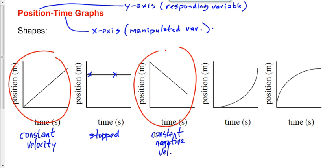Fourth graph — it's a tougher one, but reason through it. For graph one, the position was increasing at a constant rate. Here the position is increasing as well, but not at a constant rate. The position is increasing quicker and quicker as time goes by — it's speeding up. What's another word for speeding up? Acceleration. I'll call this a positive acceleration. We haven't formally defined that term yet, but most of us have some grasp of what it means: kind of speeding up.